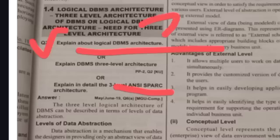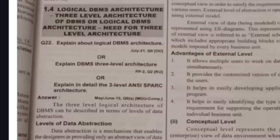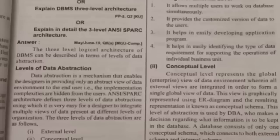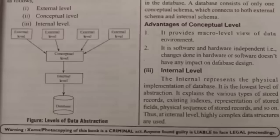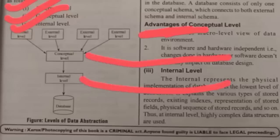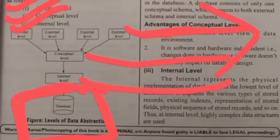The first important question from Unit 1 is: explain about three-level architecture. It is also called ANSI-SPARK architecture or logical DBMS architecture. This question will definitely appear in the question paper. Three-level architecture means the data we store in a database is divided into three levels: External Level, Conceptual Level, and Internal Level.